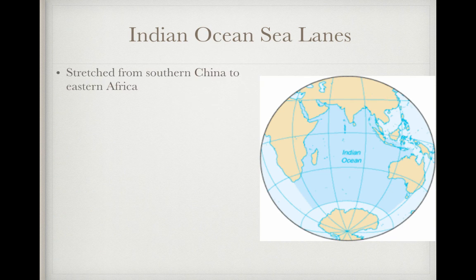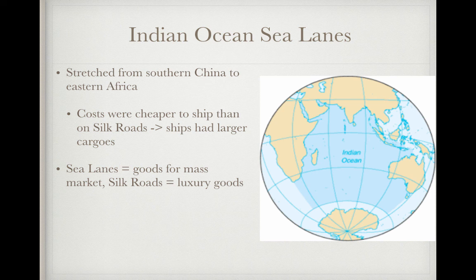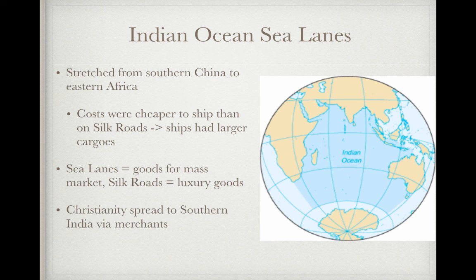Let's jump over to the Indian Ocean sea lanes. They stretch from Southern China to Eastern Africa — quite a bit of distance. Costs were cheaper to ship than on the Silk Roads because ships had larger cargoes and could trade more goods. Therefore, Indian Ocean sea lanes often had goods for the mass market, while the Silk Roads mostly carried luxury goods. Christianity is going to spread on the Indian Ocean sea lanes to Southern India via merchants, and Islam will spread as well in the seventh century via merchants, which we'll talk about in period three.